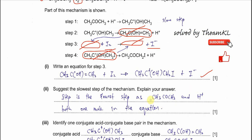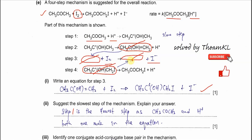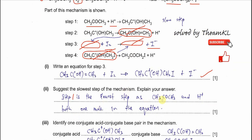Part E(ii): suggest the slow step of the mechanism and explain your answer. Step 1 is the slow step. In the rate equation, propanone is first order and H⁺ is first order. In Step 1, propanone and H⁺ both appear as one mole each on the reactant side, which matches the rate equation. This makes Step 1 the most suitable slow step.